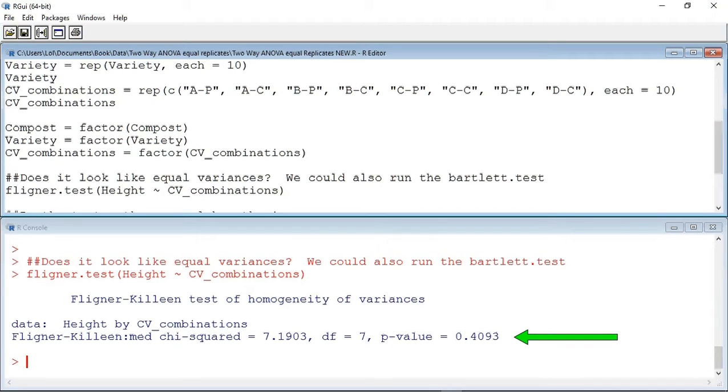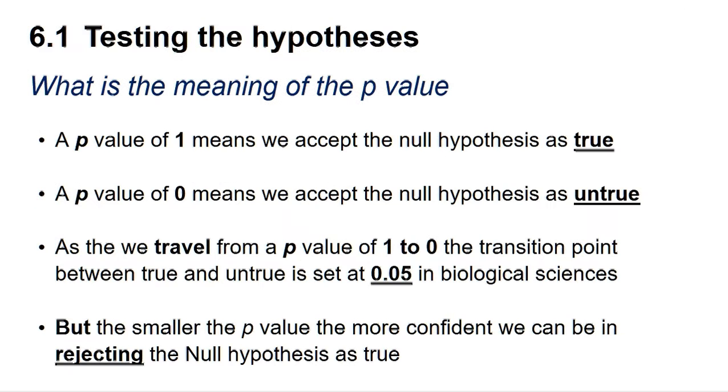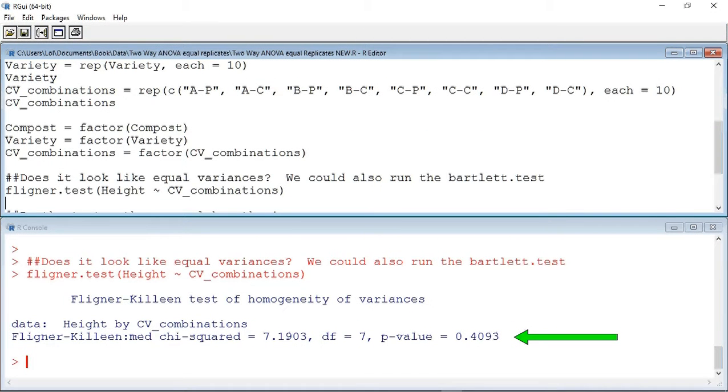We can see that it has given us a p-value of 0.4093. So, what is the meaning of the p-value? A p-value of 1 means we can accept the null hypothesis as true, whereas a p-value of 0 means we can accept the null hypothesis as untrue. As we travel from a p-value of 1 to 0, the transition point between true and untrue is set at 0.05 in the biological sciences. The smaller the p-value below 0.05, the more confident we can be in rejecting the null hypothesis. A p-value of 0.4093 is above our transition probability of 0.05, which means the result is not significant.